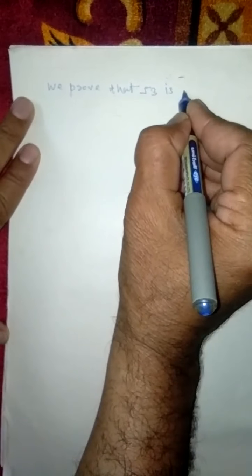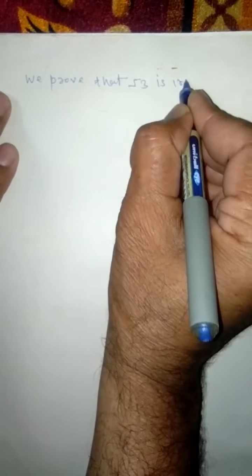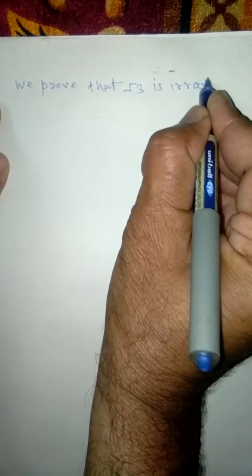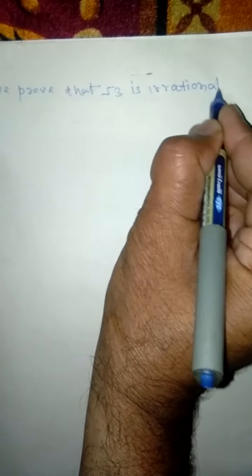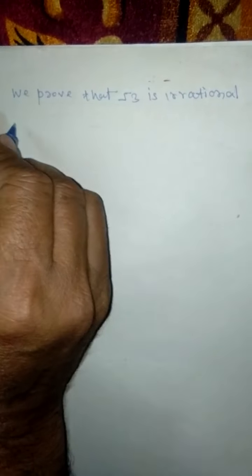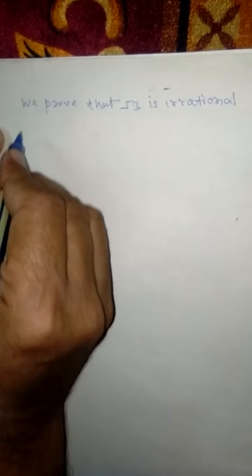Now take an example. We prove that root 3 is irrational. This will prove it. Proof.